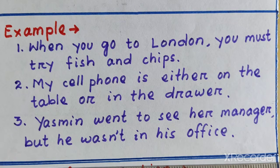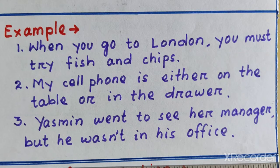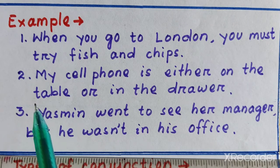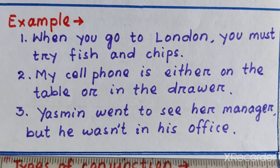In the next sentence: 'My cellphone is either on the table or in the drawer.' The conjunction is the combination 'either...or,' and it connects two phrases: 'on the table' and 'in the drawer.'